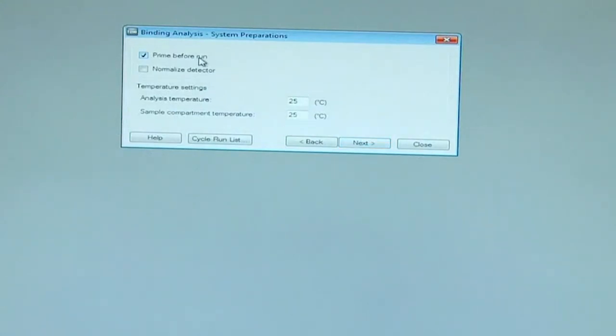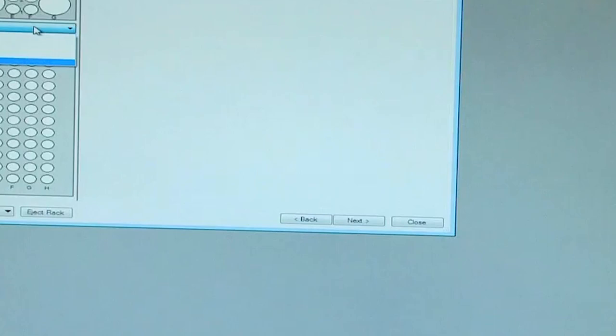And we will go to the next tab. We will select prime before run. And normalize is not required here because the chip is already immobilized. And we will go with the default temperatures. And we will go to the next tab. Here, we will not select a micro title plate. And this is our rack positions for a binding experiment. Here, we have at the C1 position HBS EP plus buffer for three different startups. We have three concentrations of analytes: high, medium and low. And we have the regeneration solution here, which is 10 millimolar glycine pH 2.5. And we will prepare our solutions and start the binding experiment.